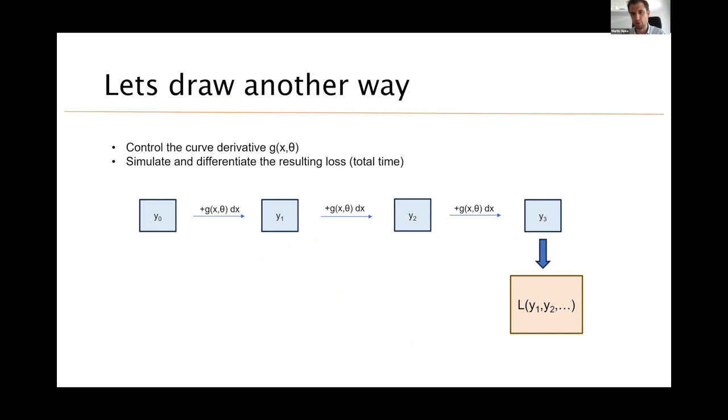This is how the dynamics will look like. So we will start at some initial point Y0 and we will be integrating by adding some function G, which is the dynamics, times some integration step. And at the end of the curve, when we actually hit the point B, we will be able to calculate the total time. In this case, it's a loss. And we actually using differentiation technique and automatic differentiation, we are going to calculate the gradient of the loss with respect to the control parameters along the entire trajectory.